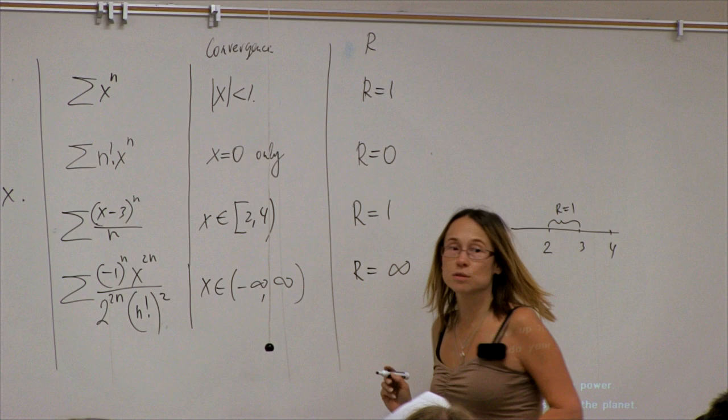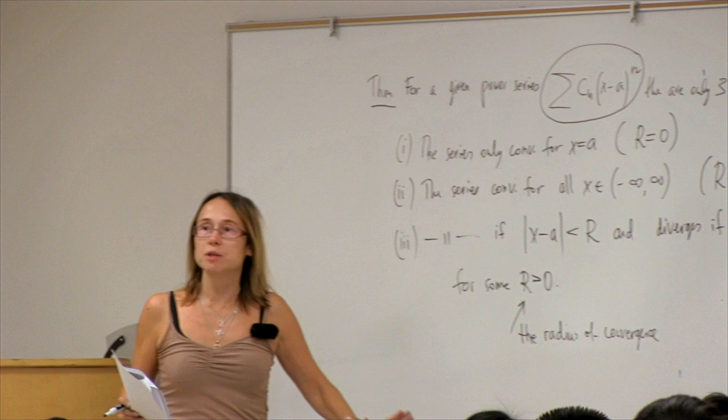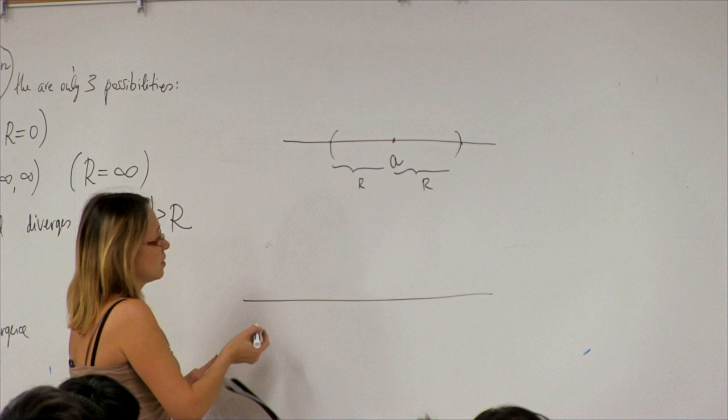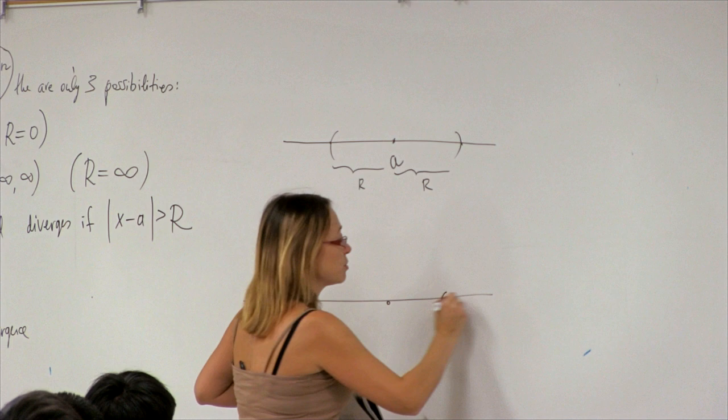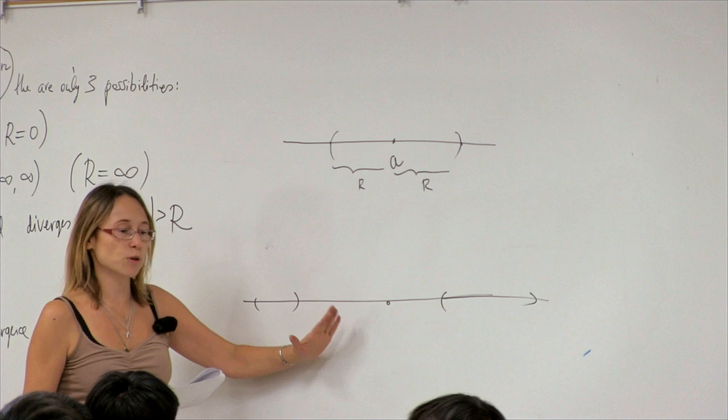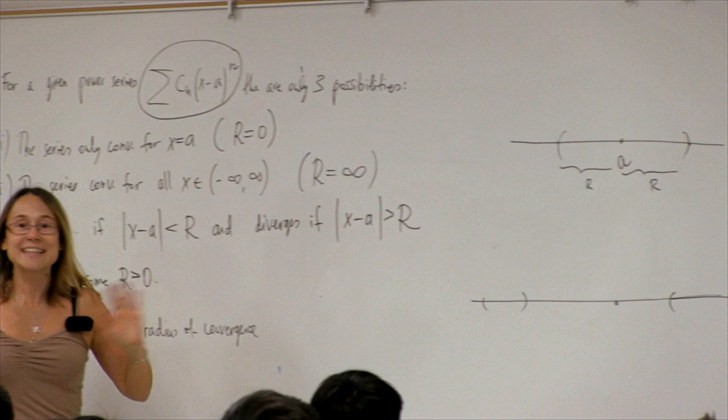Very interestingly, this exhausts all possible cases. For example, we could not have a picture where the series converges in one region, then at some isolated point, then starting from somewhere else — that's impossible. The set of x for which a power series converges can only be a single point, an interval, or the whole real line.